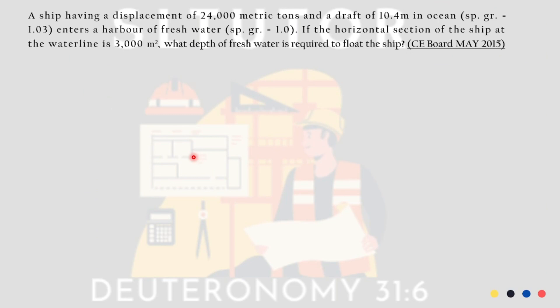Next question. A ship having a displacement of 24,000 metric tons and a draft of 10.4 meters in ocean — specific gravity of the ocean is 1.02 — enters a harbor of freshwater, which has a specific gravity of 1.0. If the horizontal section of the ship at the waterline is 3,000 square meters, what depth of freshwater is required to float the ship? This problem is from Seaboard May 2015 as well. Letter A: 10.17, Letter B: 10.63, Letter C: 10.95, Letter D: 11.17.